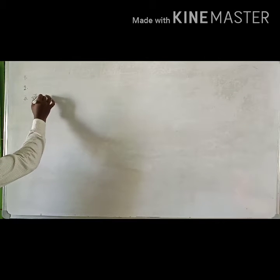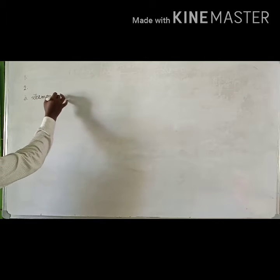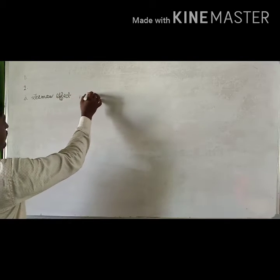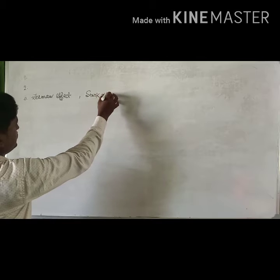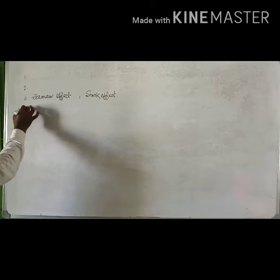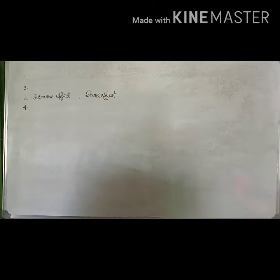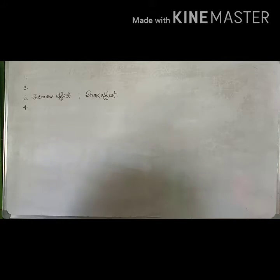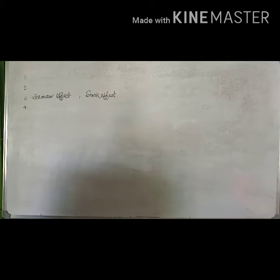Bohr's Theory cannot explain the splitting of several lines in the spectrum of hydrogen atom in the presence of magnetic field, i.e. the Zeeman effect, and in the presence of electric field, i.e. the Stark effect. Bohr's Theory also cannot explain the fine structure of the spectrum of hydrogen atom, and does not give any idea about the arrangement of electrons in orbit.